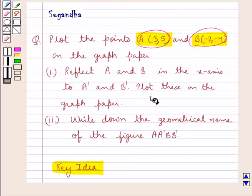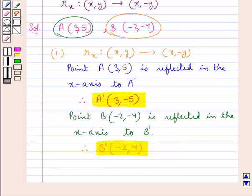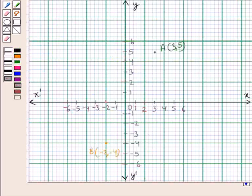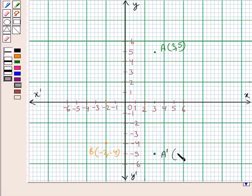We are supposed to plot these points on the graph paper. First, let us plot point A' with coordinates (3, -5). For this, we will move 3 units to the right from the origin and 5 units below. So we reach at this point. This is point A' with coordinates (3, -5).